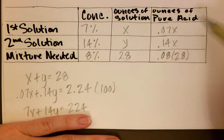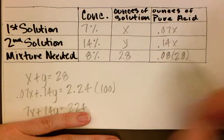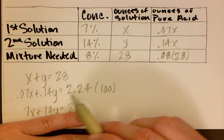The second equation we want to set up is our ounces of pure acid. So we have 0.07x plus 0.14y equals, when we multiply 0.08 times 28, we get 2.24.